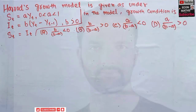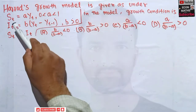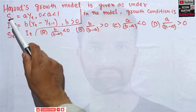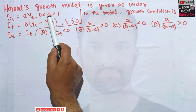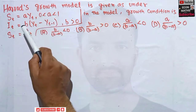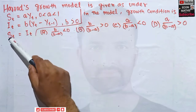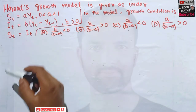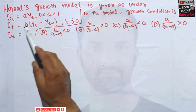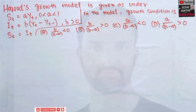In this video we will try to solve another tricky question on the Harrod-Domar growth model. The model is given as: S_t = aY_t, where S_t shows savings at time period t, and the value of a lies between 0 and 1. Investment I_t = b(Y_t - Y_{t-1}), where b is greater than 0. Here, a tells us the fraction of income that is saved, and b tells us the fraction of income that is invested. We also have S_t = I_t.